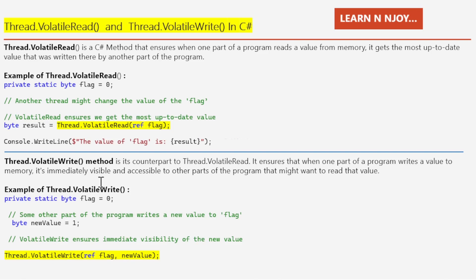Here again, let's say we have a static flag variable of byte data type initialized with 0. Some other part of the program writes a new value: I assign a value to a new_value variable of byte data type. Then I call Thread.VolatileWrite(ref flag, new_value). This changes the value of flag and makes sure that change is immediately visible to other parts of the program that might want to read it. Let's switch to Visual Studio and see a complete example using both Thread.VolatileRead and Thread.VolatileWrite together.